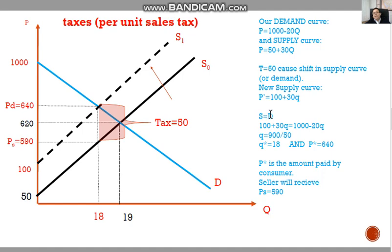Assume that our new supply function by adding tax is 100 plus 30Q. There is a 50 unit increase in the supply function. Setting supply and demand equal, this sector moves from this point to here. The equilibrium quantity is 18, reduced by one.